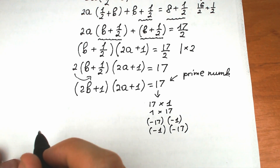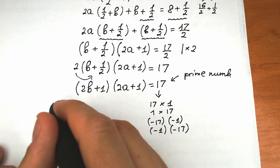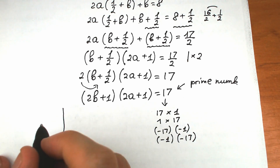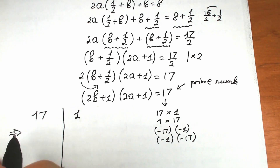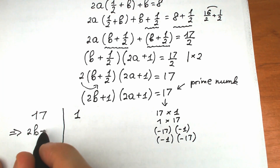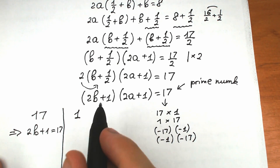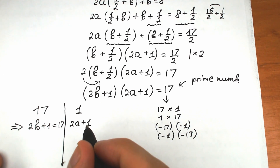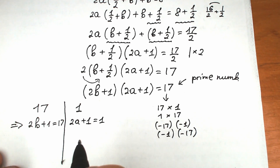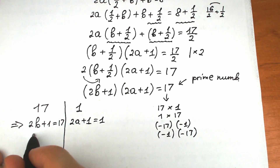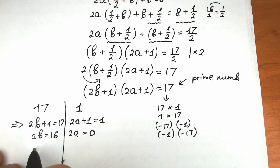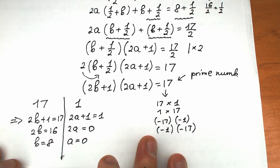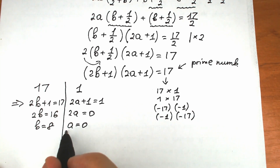Case 1: (2b+1) = 17 and (2a+1) = 1. Solving: 2b = 16, so b = 8; and 2a = 0, so a = 0. Our first solution is a = 0, b = 8.